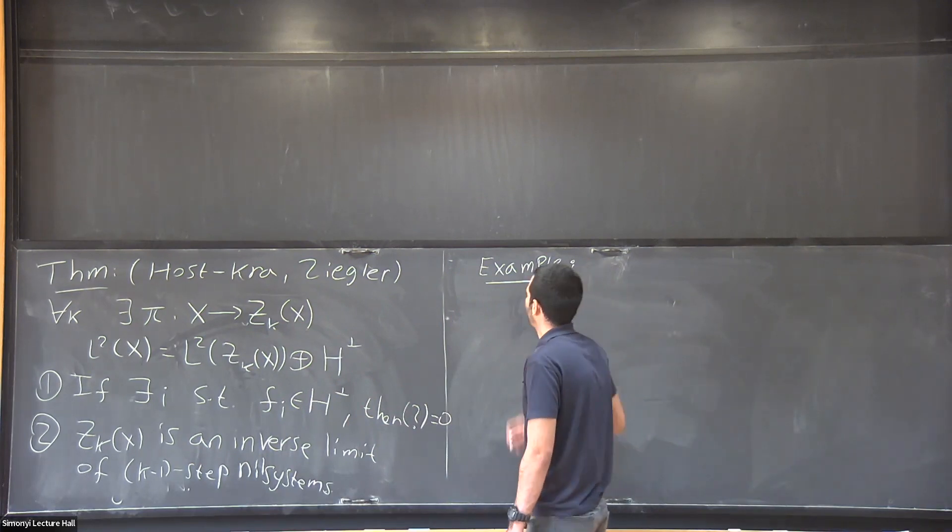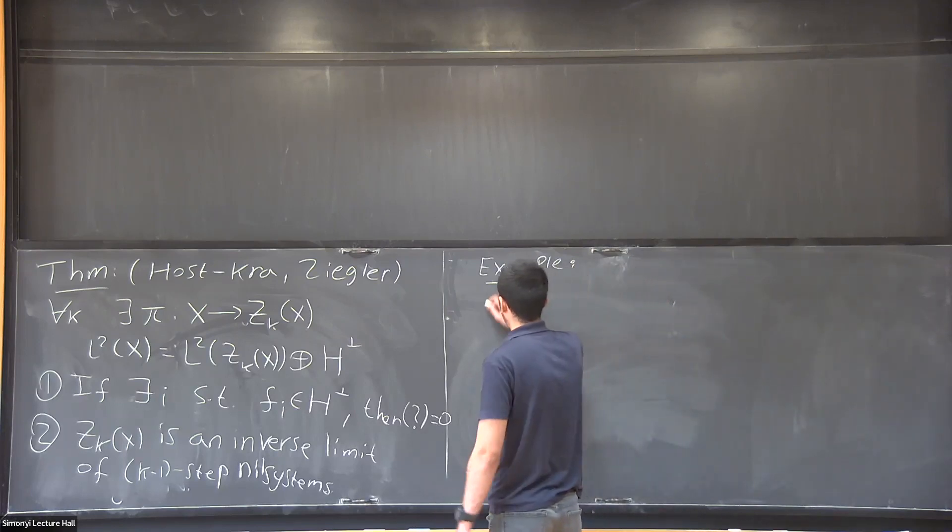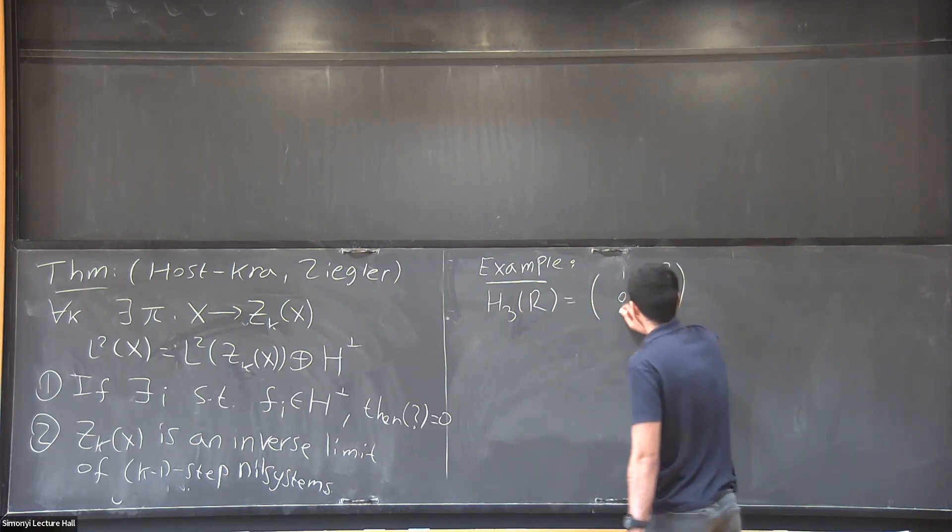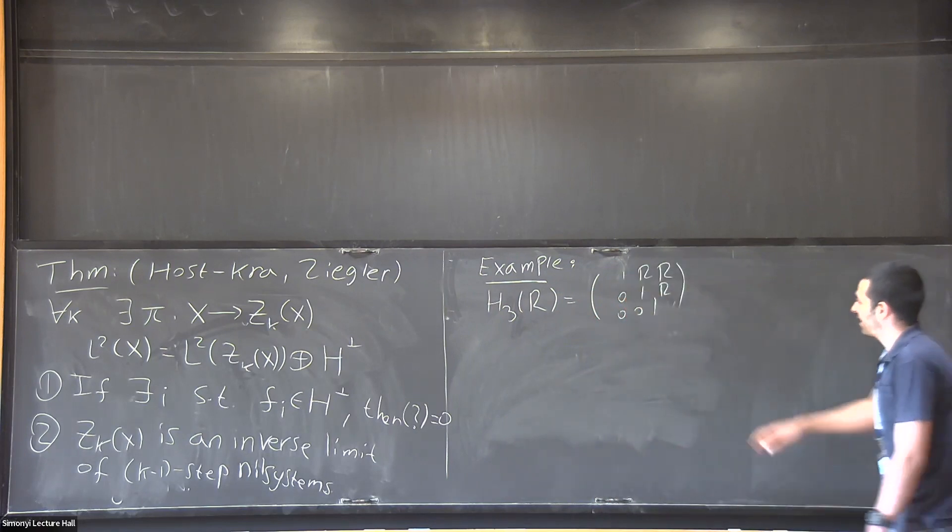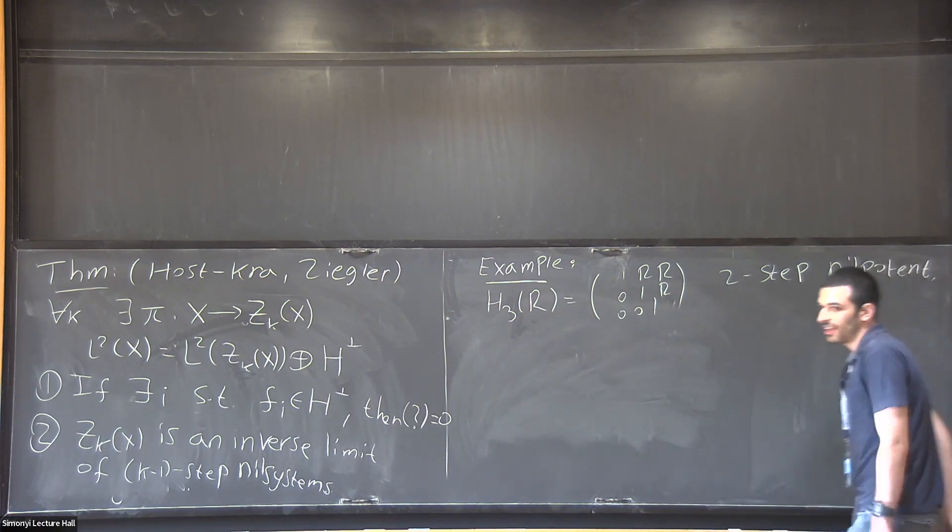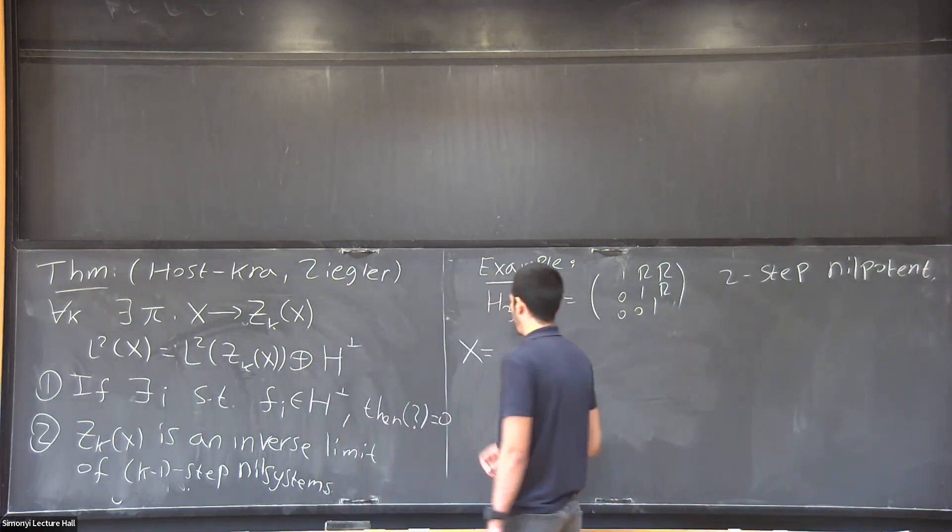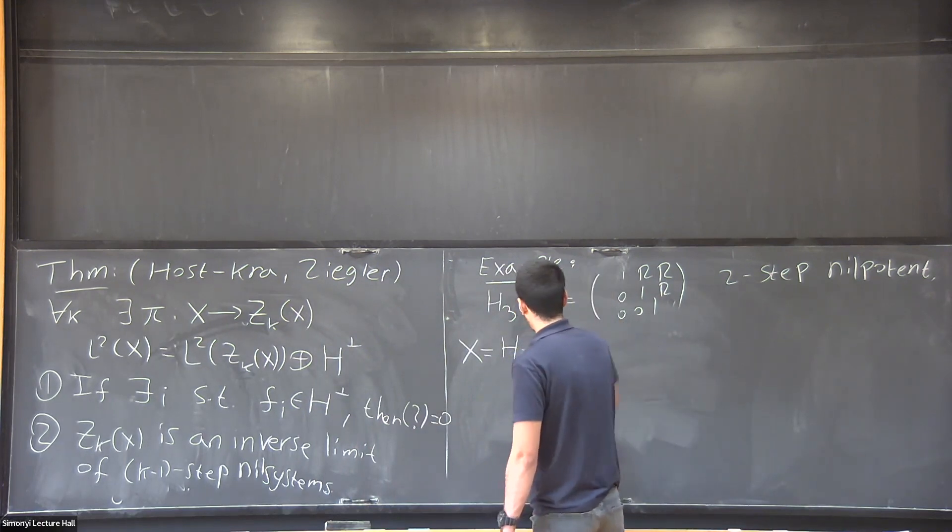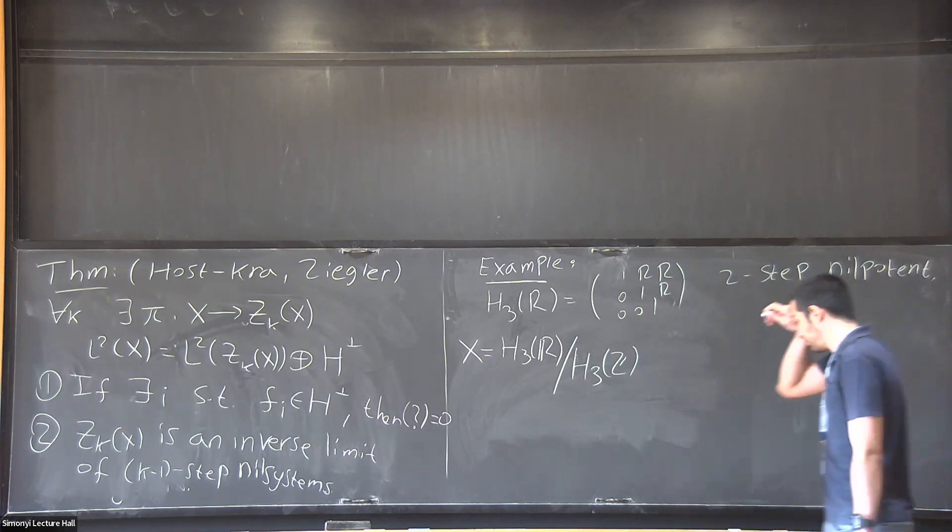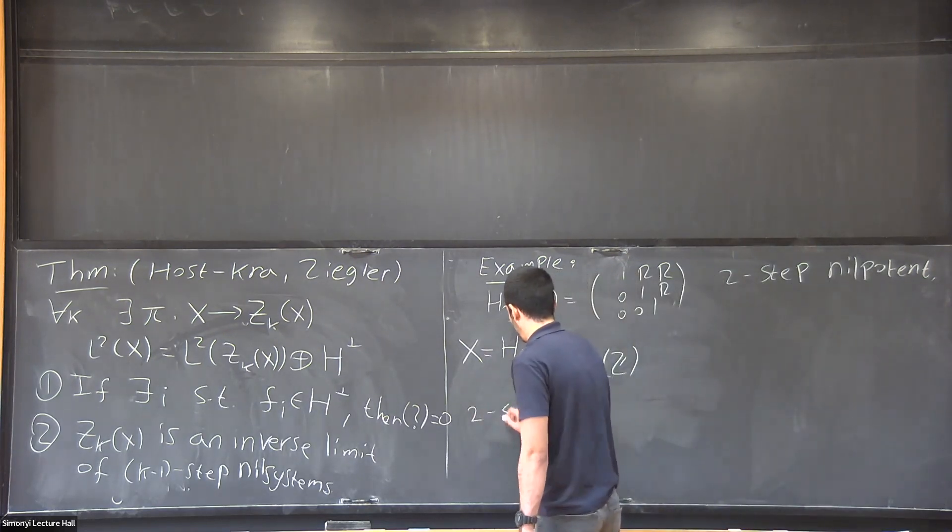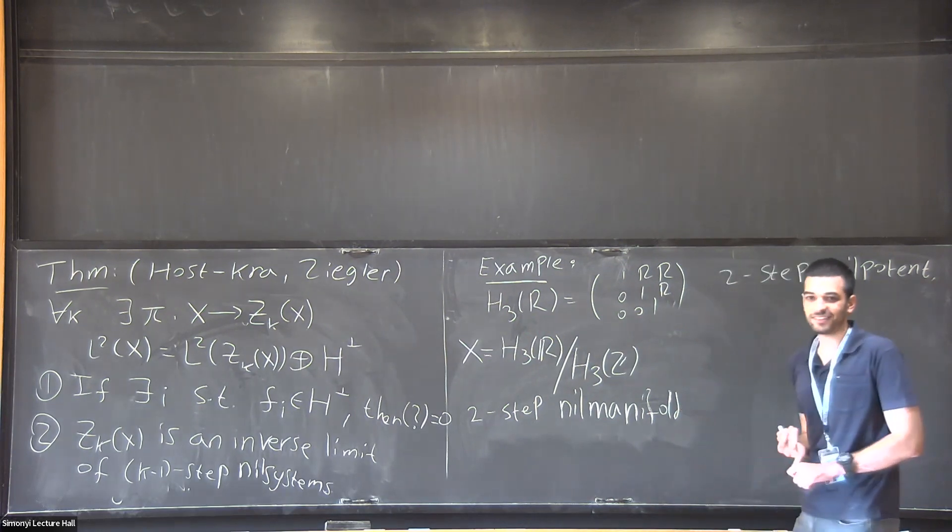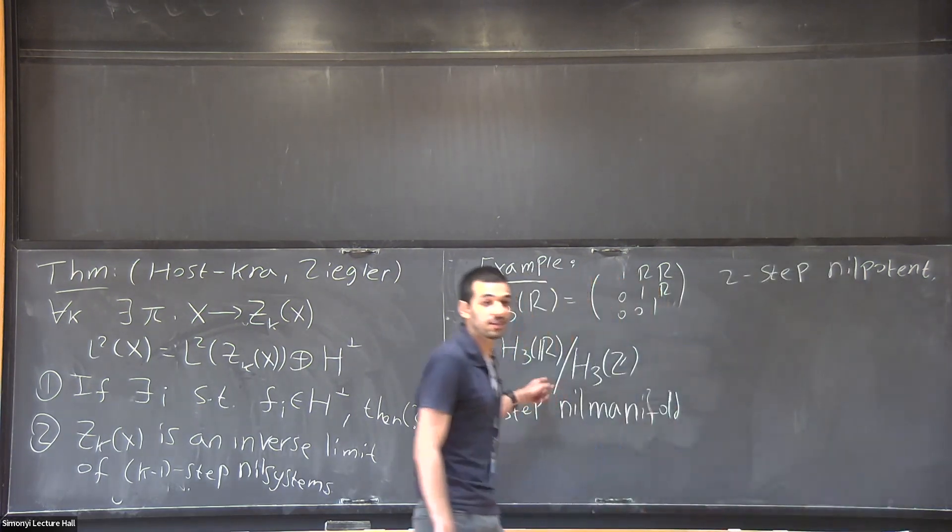So here's an example of a nice nilsystem. If I have any commutative ring R, the Heisenberg group over R is the group of all upper triangular matrices with one on the diagonal. And if R is commutative, this is an example of a two-step nilpotent group. And specifically, I can look at the following system. I can look at the following topological space. I will take the group Heisenberg over R and divide it by the Heisenberg over the integers. So that's a homogeneous space, but it's also an example of a two-step nil manifold. So nil is for nilpotent. The groups are nilpotent.